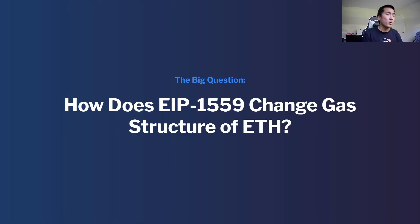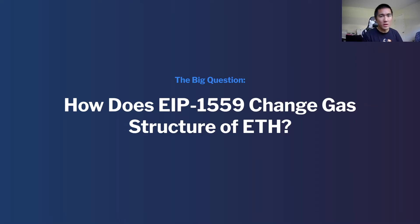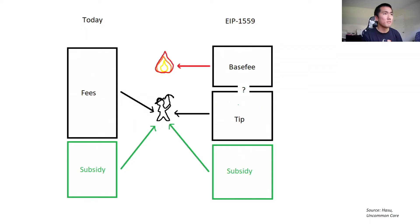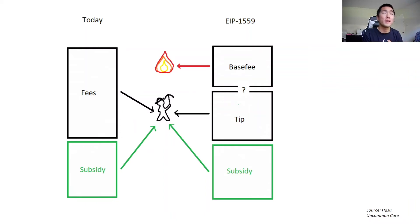Now that you have a better understanding of what MEV is, how does EIP-1559 change the gas structure of Ethereum? There are a lot of misconceptions here, so this video should clear up a lot of confusion. This graphic from Uncommon Core does a good job explaining what today's gas structure looks like on the left and how it will look after EIP-1559.